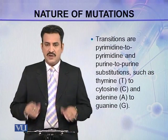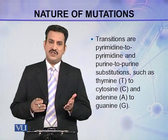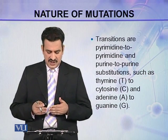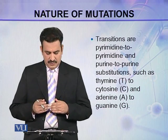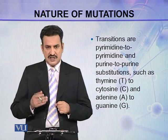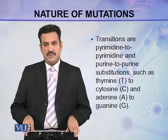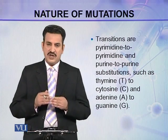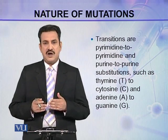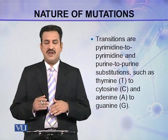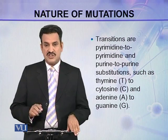Transitions are pyrimidine-to-pyrimidine and purine-to-purine substitutions, such as thymine to cytosine — both are pyrimidines — and adenine to guanine — both are purines. So a purine is replaced by another purine, or a pyrimidine is replaced by another pyrimidine. Such changes are called transitions.